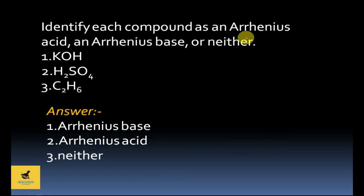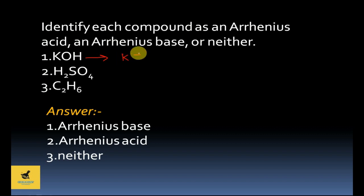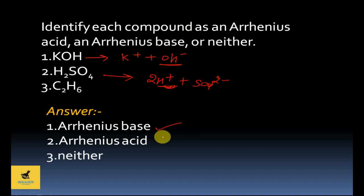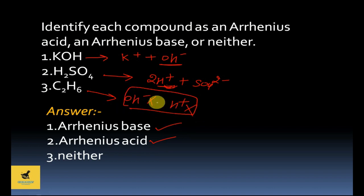Now let's look at some practice questions — identify whether each is an Arrhenius acid, Arrhenius base, or neither. First example: KOH — its reaction in water gives K⁺ and OH⁻, so due to OH⁻ it is an Arrhenius base. Next, H₂SO₄ — in water it gives 2H⁺ and SO₄²⁻, so due to H⁺ it is an Arrhenius acid. Next, C₂H₆ — it releases neither OH⁻ nor H⁺ in water, so the Arrhenius concept cannot explain it, and it is neither an Arrhenius acid nor base.